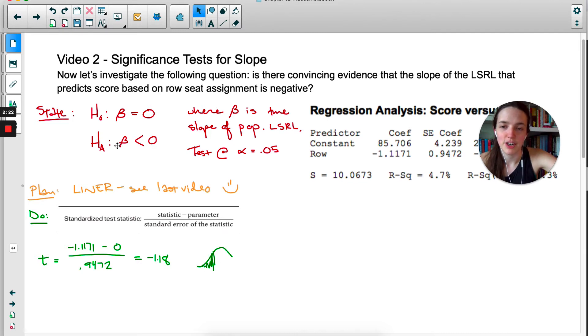We're looking for area to the left, so we're going to use tcdf, negative 1,000 to negative 1.18. Degree of freedom, remember, is n minus 2. We get a p-value of 0.124.